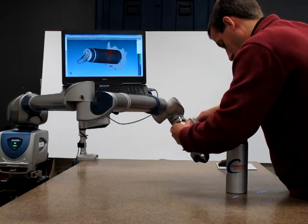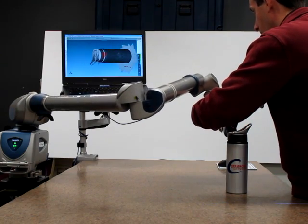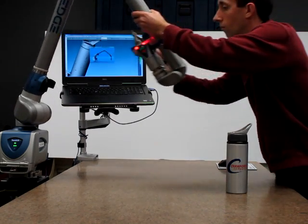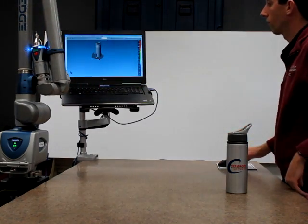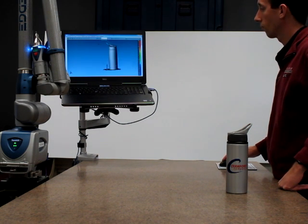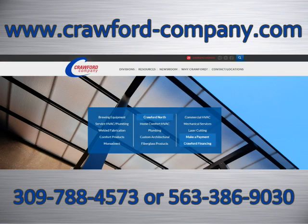In conclusion, this coordinate measuring machine further strengthens our ability to create custom and accurate steel products in short time frames. For further information on how we can be of service to your needs, please contact us at 309-788-4573 or check out our website at www.crawford-company.com.